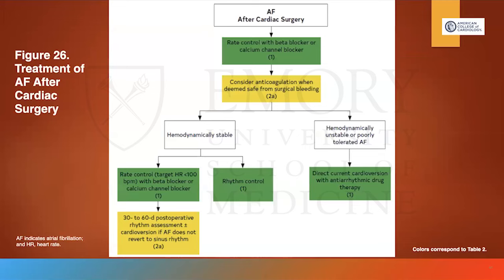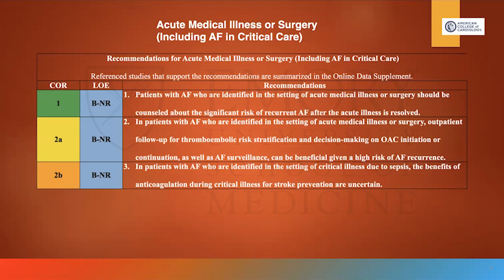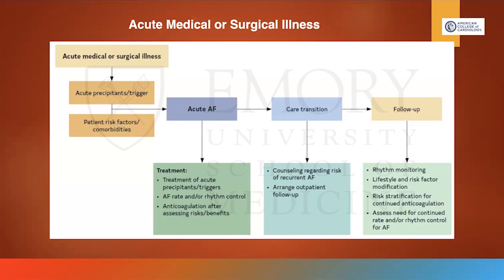For acute medical illness including AFib in critical care: Class 1 — patients with AFib identified during acute illness or surgery should be counseled about the significant risk of AFib recurrence after the acute illness resolves. Class 2A — outpatient follow-up for thromboembolic risk stratification, decision-making on oral anticoagulation initiation or continuation, and AFib surveillance are beneficial given the high recurrence risk. Management includes treating precipitating factors, rate or rhythm control, stroke prevention, and outpatient rhythm monitoring with wearables or implantable loop recorders.